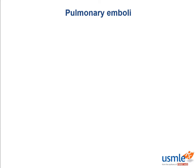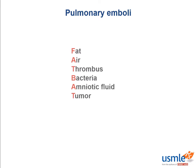Hey everyone, Ahmed here, and today we'll be talking about pulmonary emboli. There are a number of things that can embolize to the pulmonary arterial vasculature, and it's pretty well summarized by the FAT BAT mnemonic. So we have fat, air, thrombus, bacteria, amniotic fluid, and tumors.